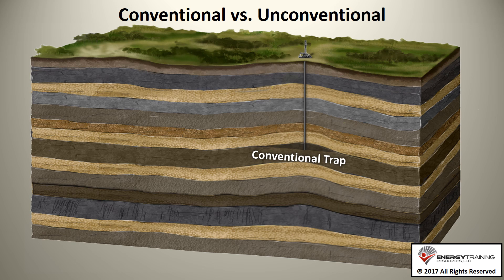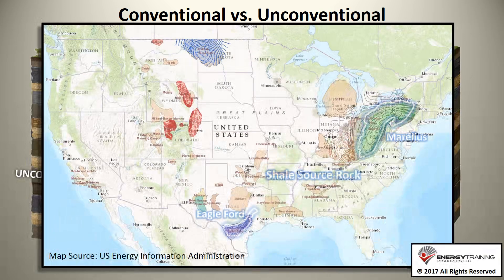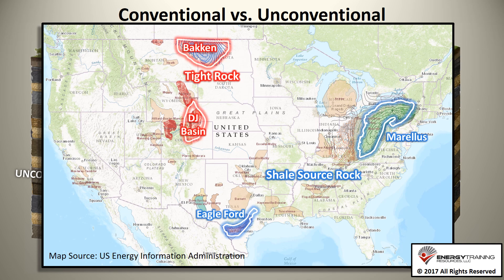Around the year 2000, a combination of strong oil and gas prices and advances in horizontal drilling and hydraulic fracturing technology began to make it economically feasible to produce from source rock layers or other poor-quality rock layers that contain migrated oil and gas, commonly called tight rock. For example, most of the drilling in the Eagle Ford and Marcellus areas is in shale source rock, whereas most of the drilling in the DJ Basin and the Bakken is into tight rock.